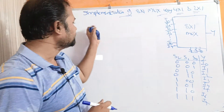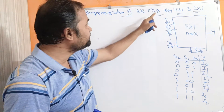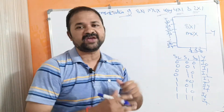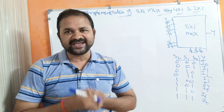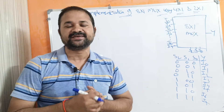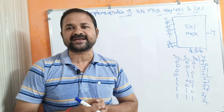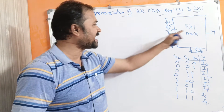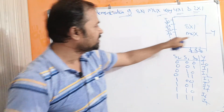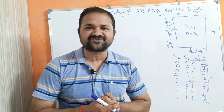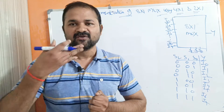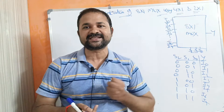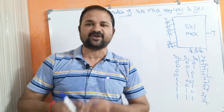Let us discuss the implementation of an 8 by 1 multiplexer using a 4 by 1 multiplexer and a 2 by 1 multiplexer. We know that an 8 by 1 multiplexer accepts 8 inputs and produces only 1 output. Likewise, a 4 by 1 multiplexer accepts 4 data inputs and produces 1 output, and a 2 by 1 multiplexer accepts 2 data inputs and produces 1 output.